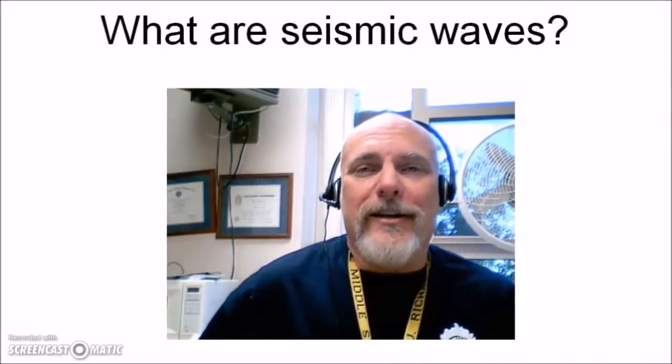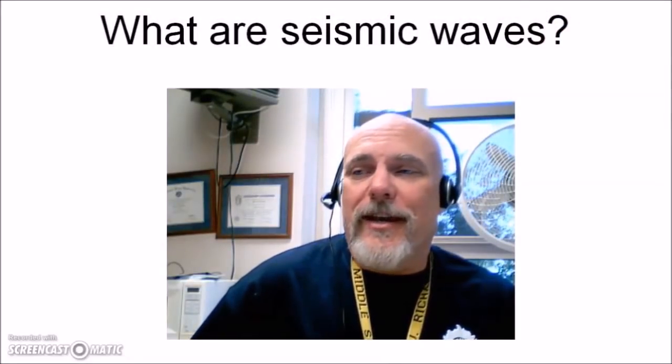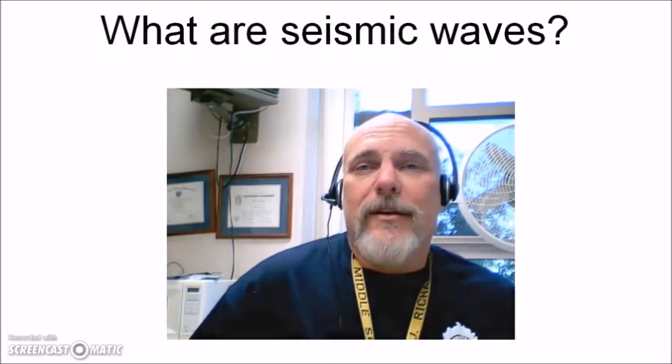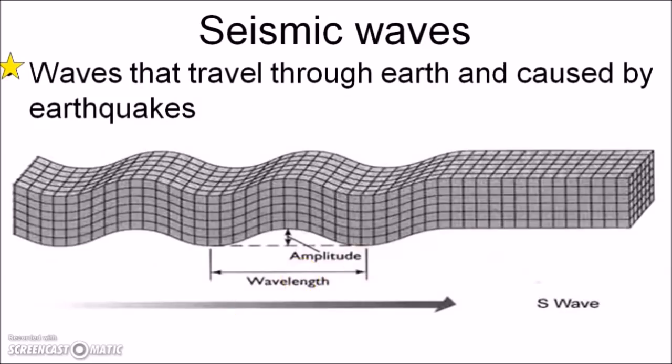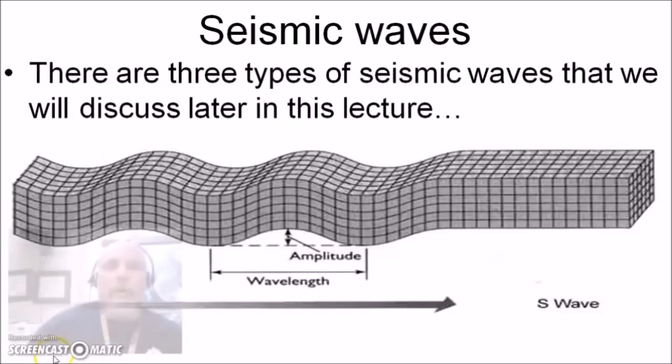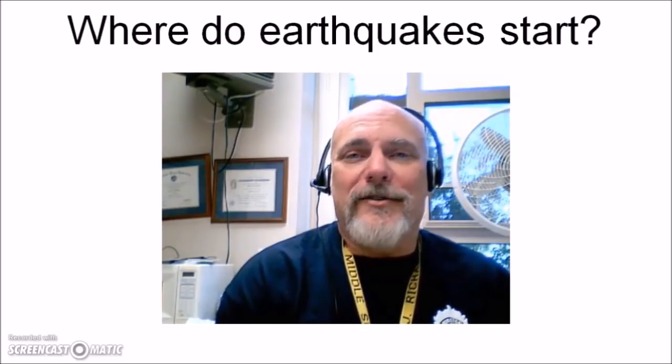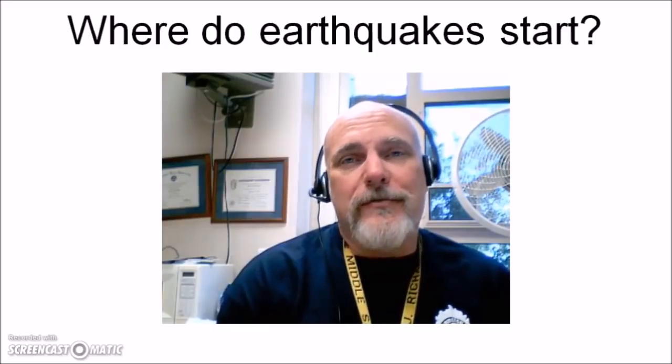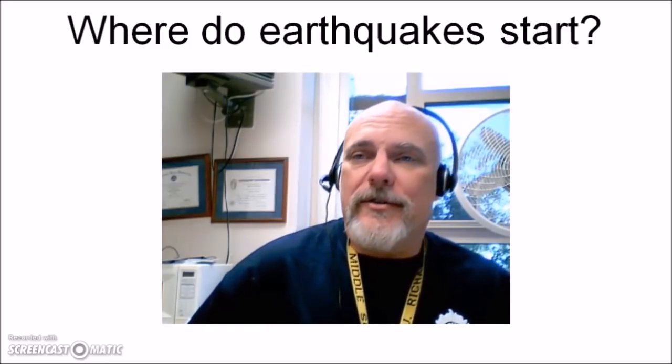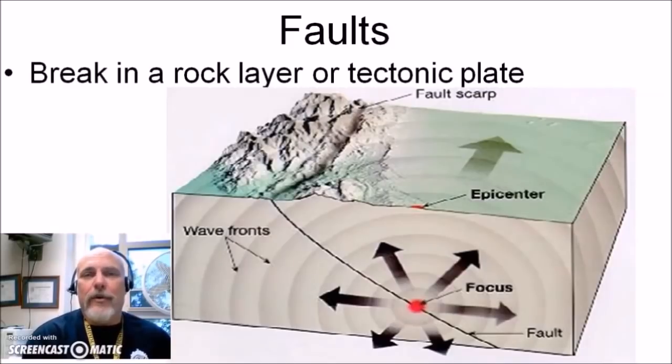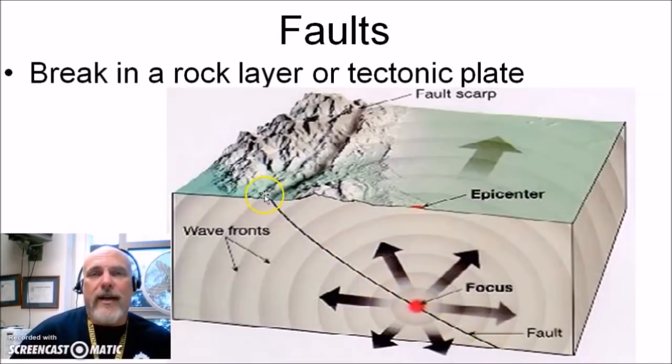The first term we need to learn is seismic wave. So what is a seismic wave? Well a seismic wave is a wave that travels through the earth and is caused by earthquakes. There are three types of seismic waves that we're going to be discussing in this lecture. But before we get to that, let's think about a little bit of review. First of all, where do earthquakes start? To find the location and the origin of an earthquake, we're going to want to look at faults. This is going to be the break in a rock layer or a tectonic plate.